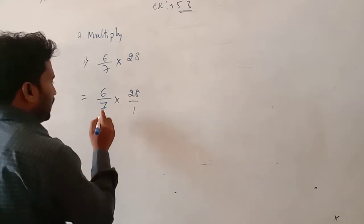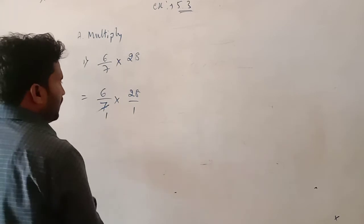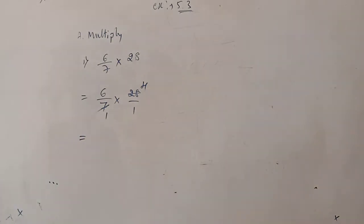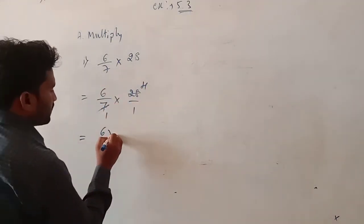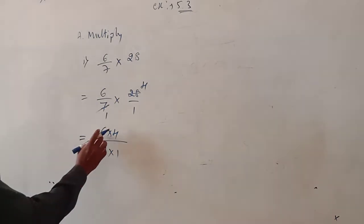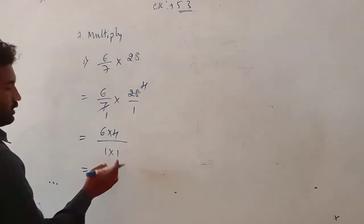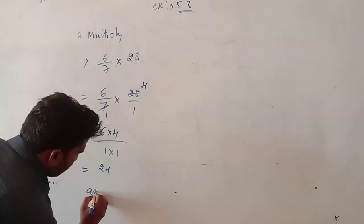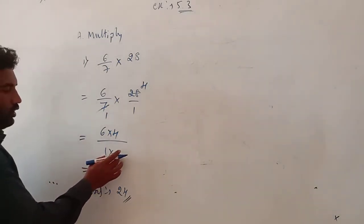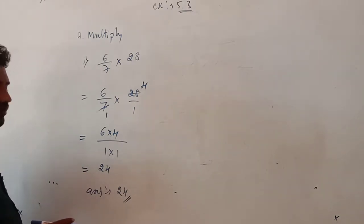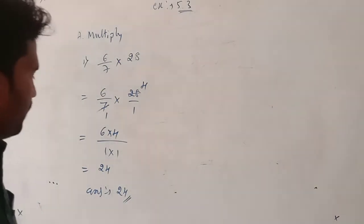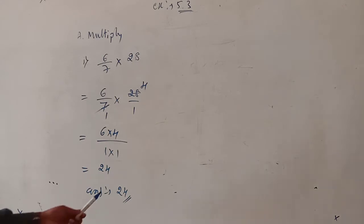First count to second term's numerator. So we can cut this: seven fours are 28, both divided by 7. So now we got a numerator that is 6 into 4, divided by 1 into 1. So 6 fours are 24, and 1 ones are 1. So the answer is 24. I am not writing the denominator 1, because if no denominator is given, we understand that denominator is 1 for all numbers. So the answer is 24.